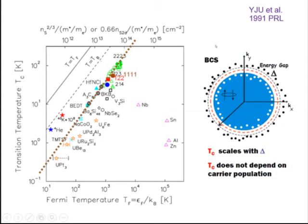In BCS superconductors, you have a Fermi surface; if you create a gap you can make it superconducting, and TC scales with the gap or electron-phonon coupling constant. But the superfluid density reflects the full Fermi sphere charge number. You can think of a system with half the energy gap: TC becomes half, but the superfluid density is the same as long as any small gap is protecting the Fermi sphere.